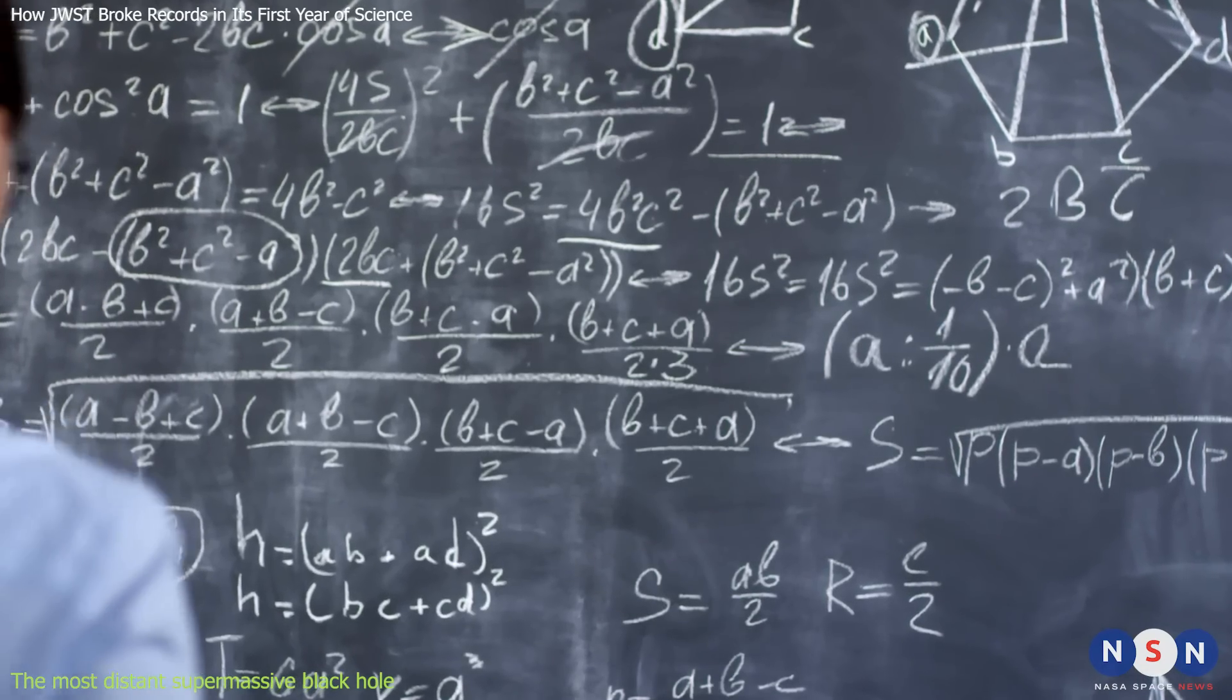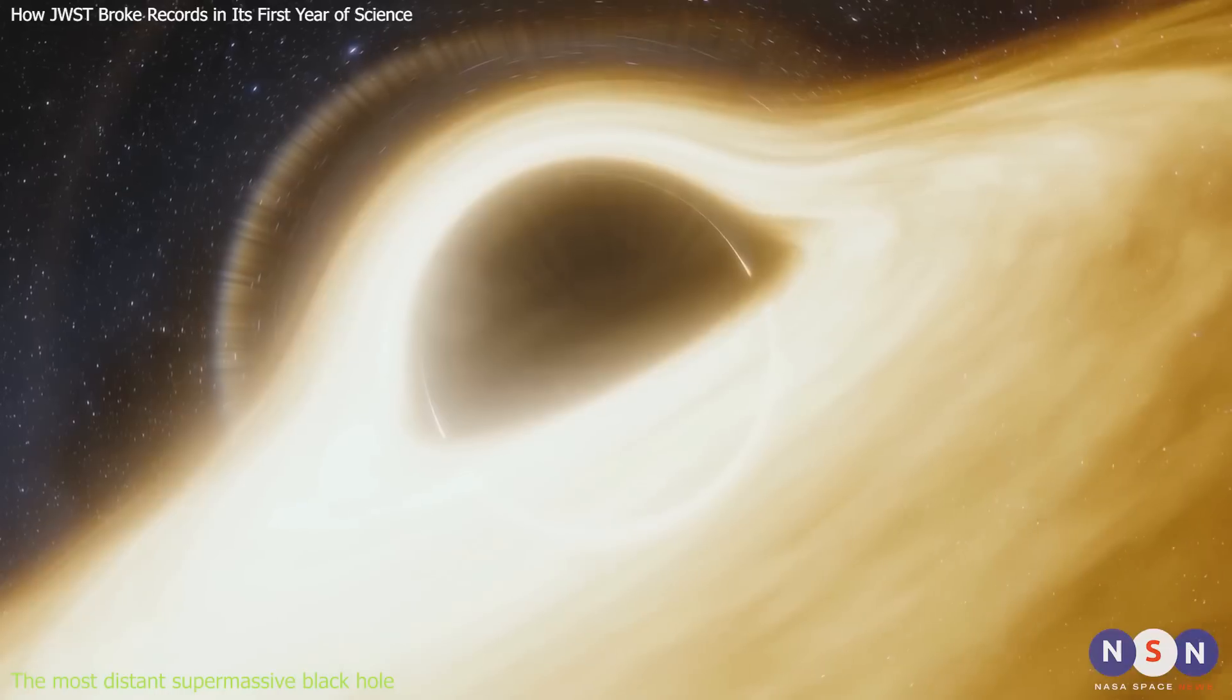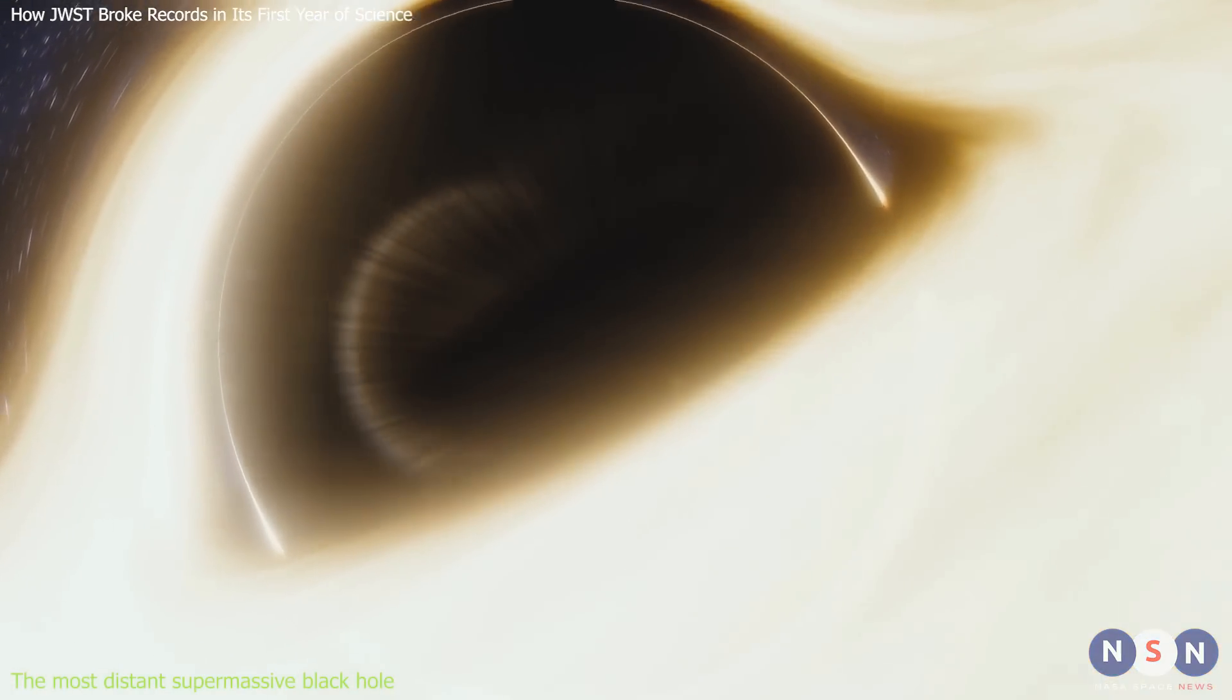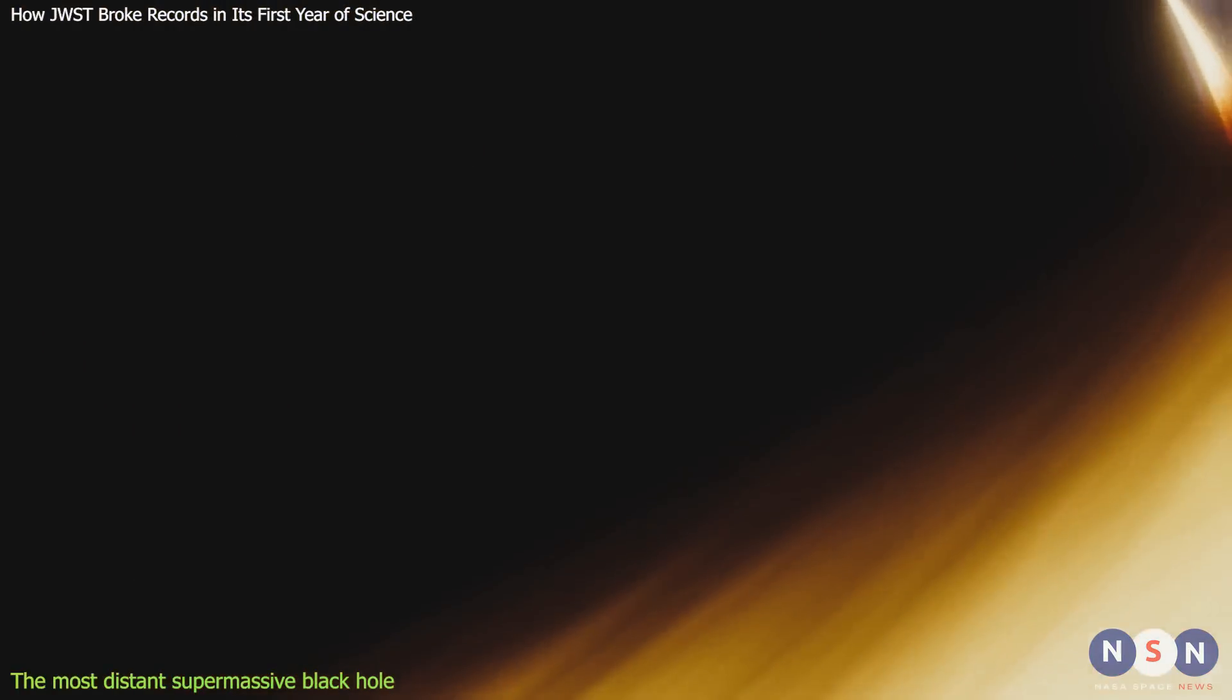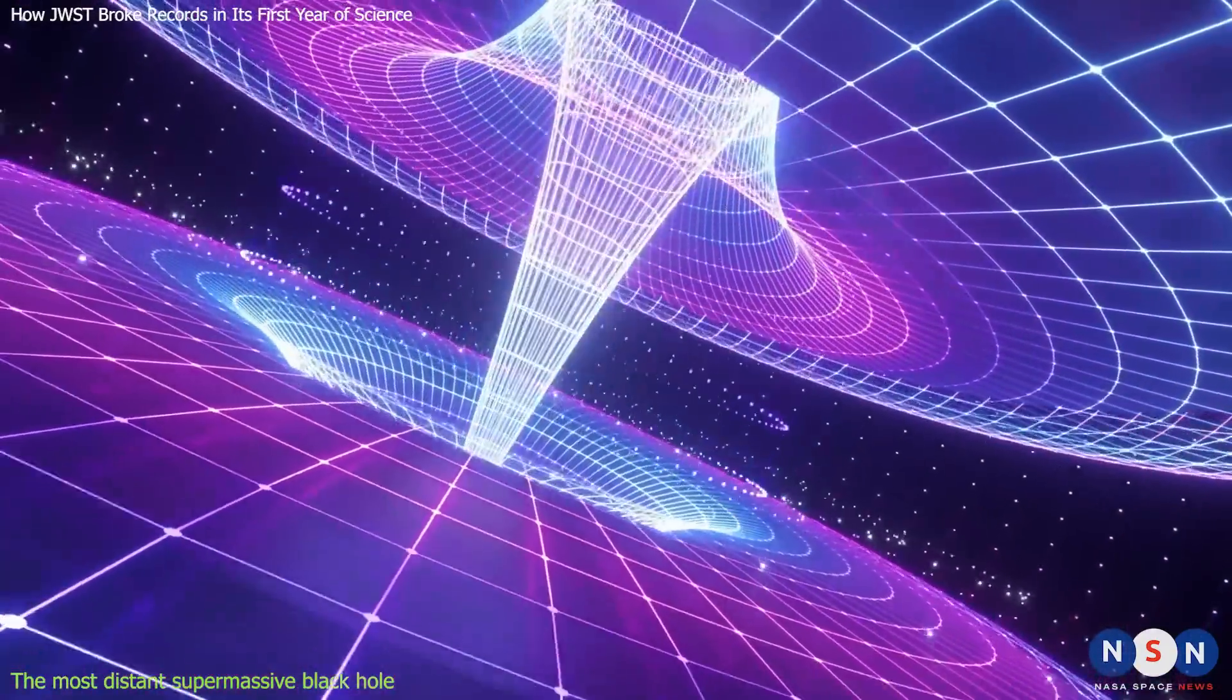The astronomers calculated that if it started as a seed black hole with about 100 solar masses, it would have to grow at the maximum possible rate, accreting matter at the speed of light, for its entire lifetime. This is very unlikely, as there are physical limits to how fast a black hole can grow.